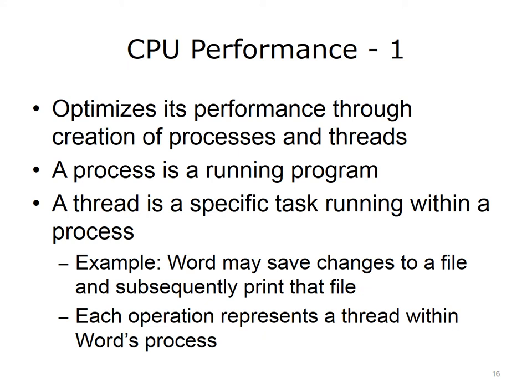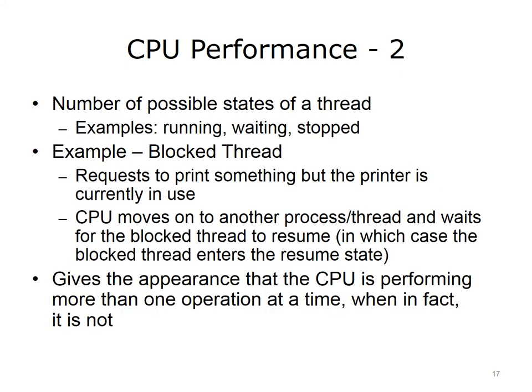The CPU optimizes its performance through the creation of processes and threads. A process is a running program, such as Microsoft Word. A thread is a specific task running within a process. For example, Word may save changes to a file and then subsequently print the file. Each of these operations represents a thread within Word's process. Threads can exist in a number of states at any given time — for example, a thread may be running, waiting, stopped, or blocked. Why would a thread be in a blocked state? A thread might be blocked, for example, if it presents a request to print something while the printer is currently in use.